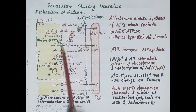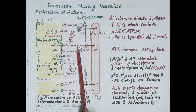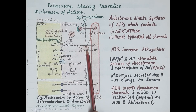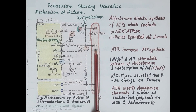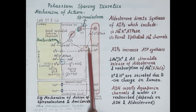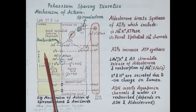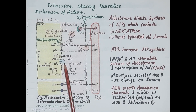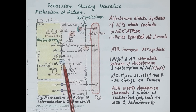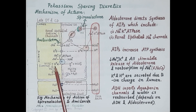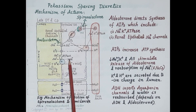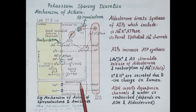Aldosterone induces reabsorption of sodium from the filtrate into the epithelial cell, and the sodium-potassium ATPase pump mediates transport of reabsorbed sodium into the blood via the peritubular capillaries. Sodium is reabsorbed in exchange for potassium, so potassium is secreted into the filtrate and urine. Aldosterone also stimulates functioning of sodium-hydrogen ATPase, so sodium is reabsorbed in exchange for hydrogen, which is also secreted into the filtrate. Thus potassium and hydrogen are secreted due to sodium reabsorption.